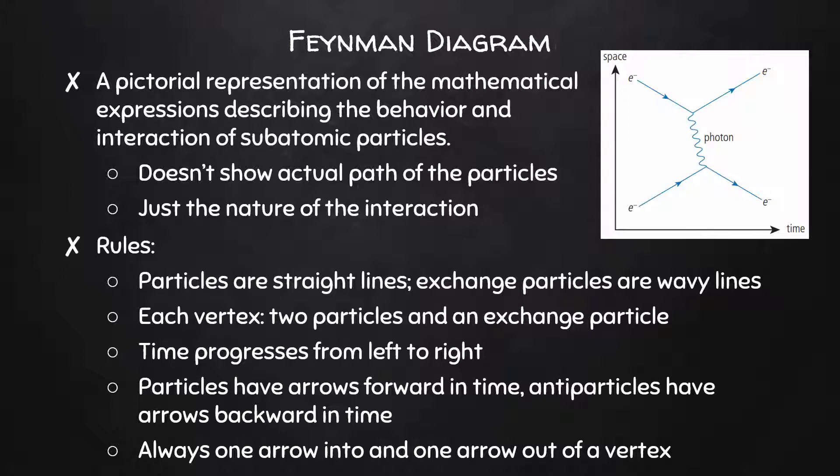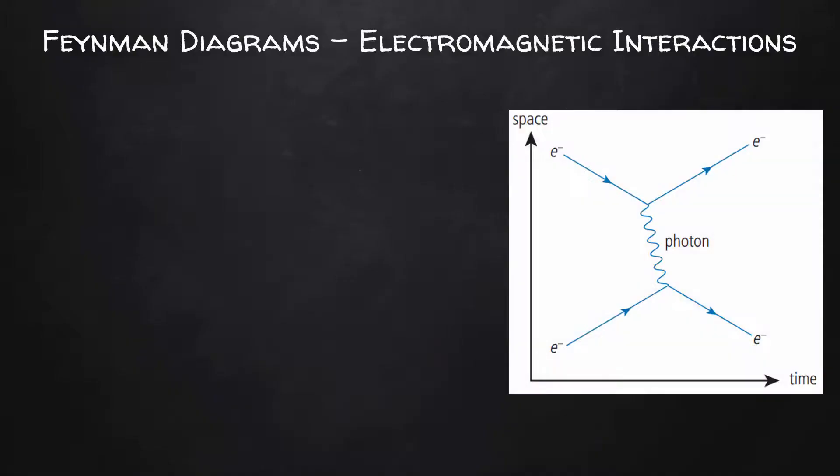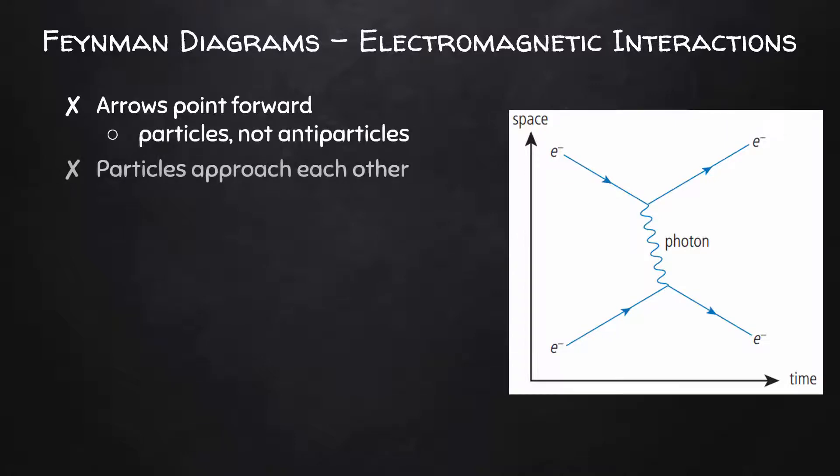Let's take a look at some examples of Feynman diagrams and we can practice interpreting them and we can see all the different types of interactions that can be represented in this form. We'll start with the Feynman diagram from the previous page. So we see all the arrows are pointing forward in time, that is from left to right, which means they are particles, not antiparticles. Next, we can see on the space axis that the particles are approaching each other.